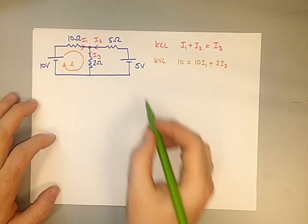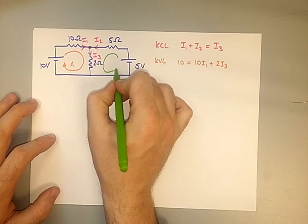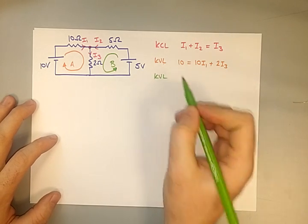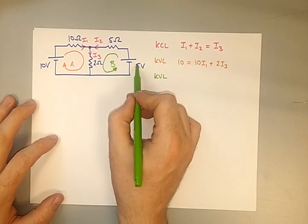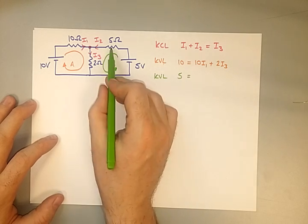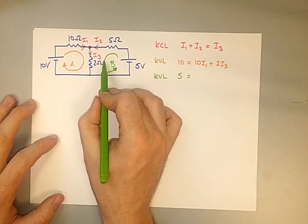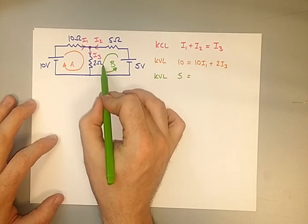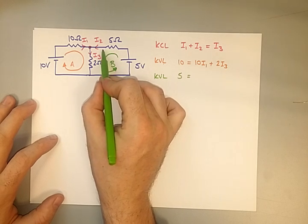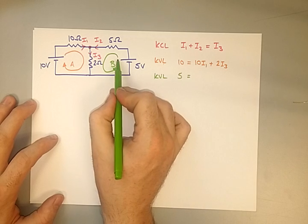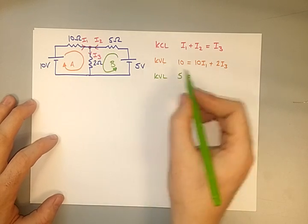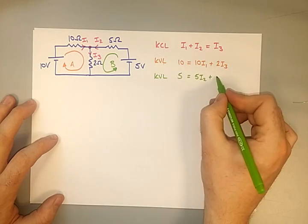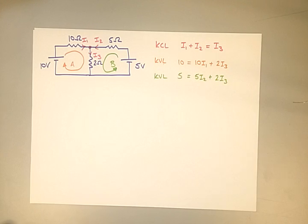For the second loop, label it Loop B. We have a source of 5 volts. Following the loop, we pass through the 5 ohm resistor and the 2 ohm resistor, giving us: 5 equals 5I2 plus 2I3.